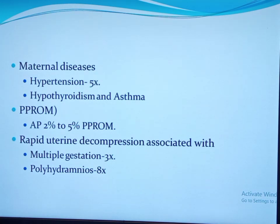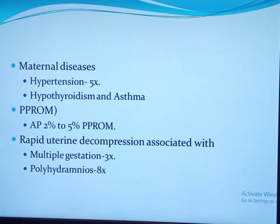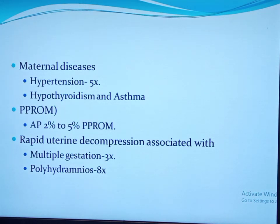Preterm PROM increases the risk of abruption: abruption occurs in 2 to 5 percent of women with preterm PROM. Whether abruption is a cause or consequence of preterm PROM is not fully known. Thrombin produced from decidual bleeding may cause membrane weakening leading to rupture, while ruptured membranes with delayed latency produce prostaglandins and cytokines that disrupt residual vessels causing hemorrhage. The risk is higher with oligohydramnios and intraamniotic infections. Rapid uterine decompression associated with multiple gestation and polyhydramnios also increases the risk.